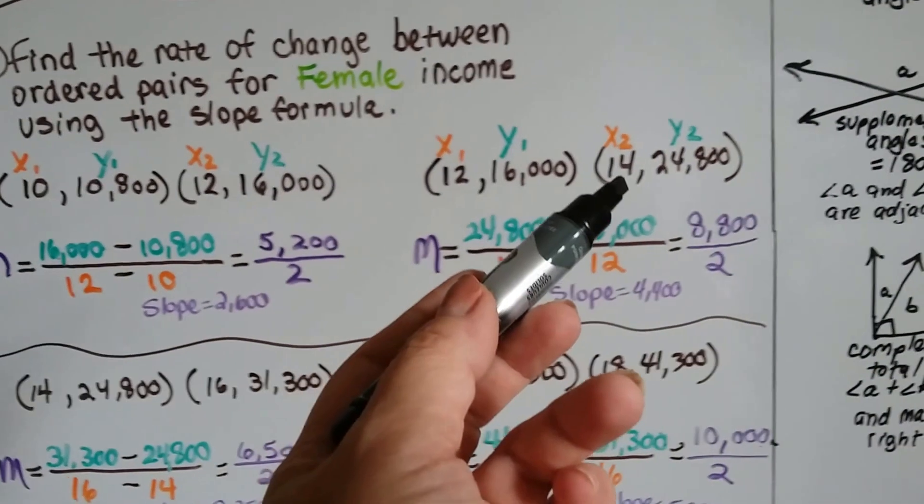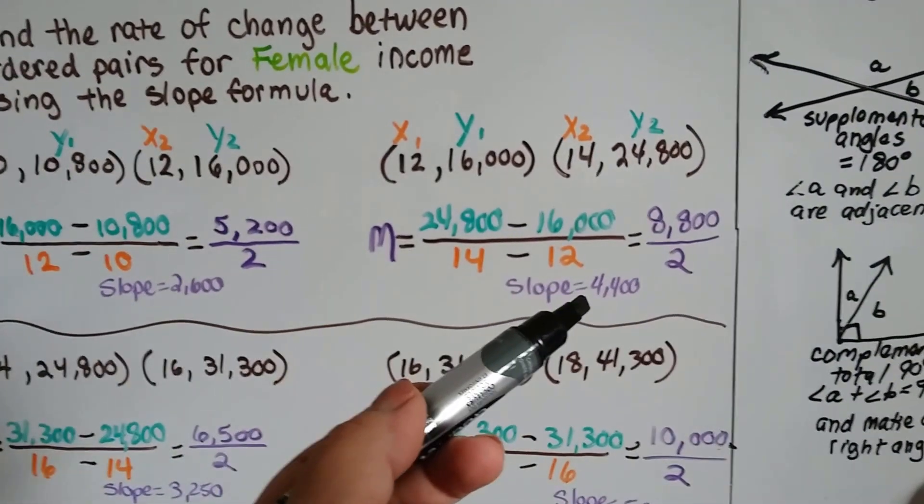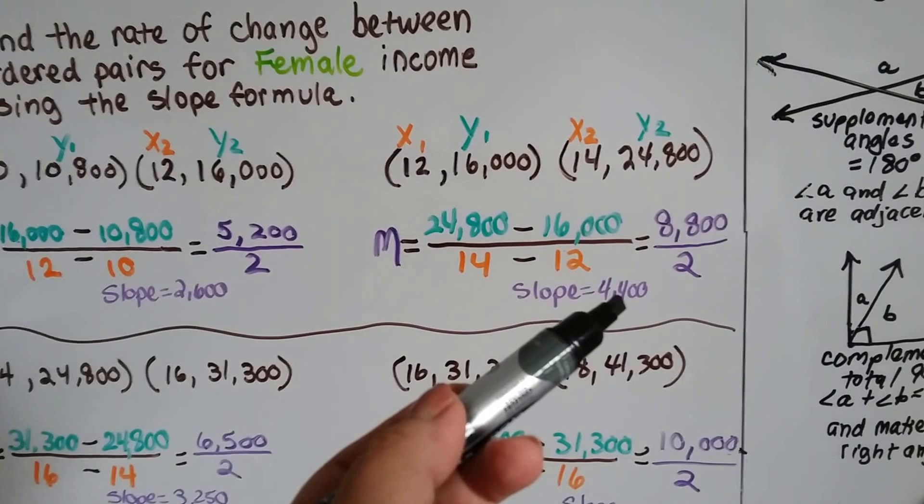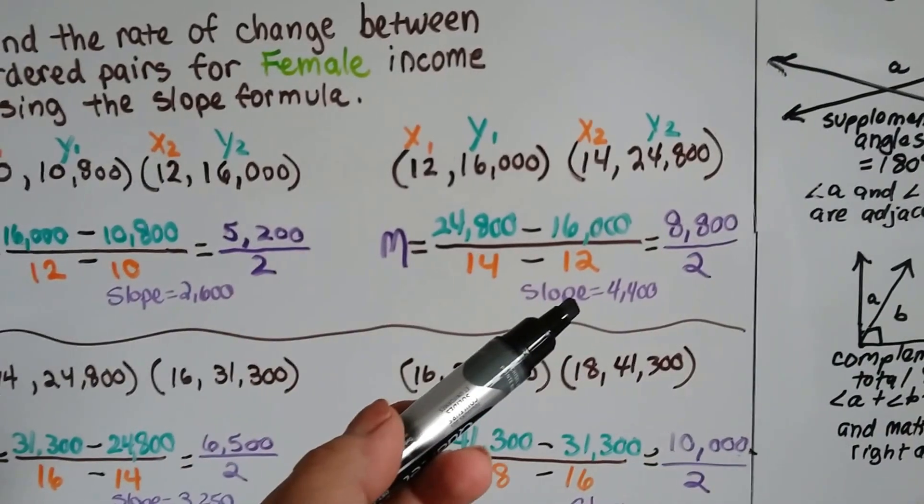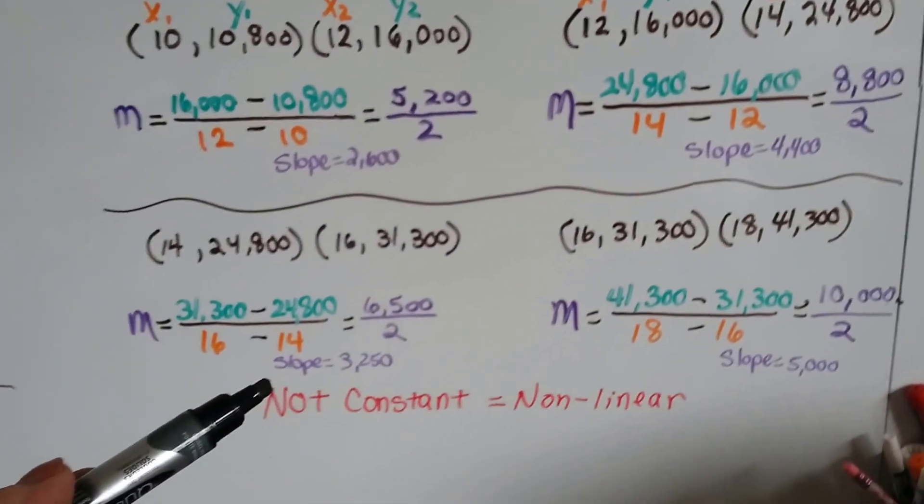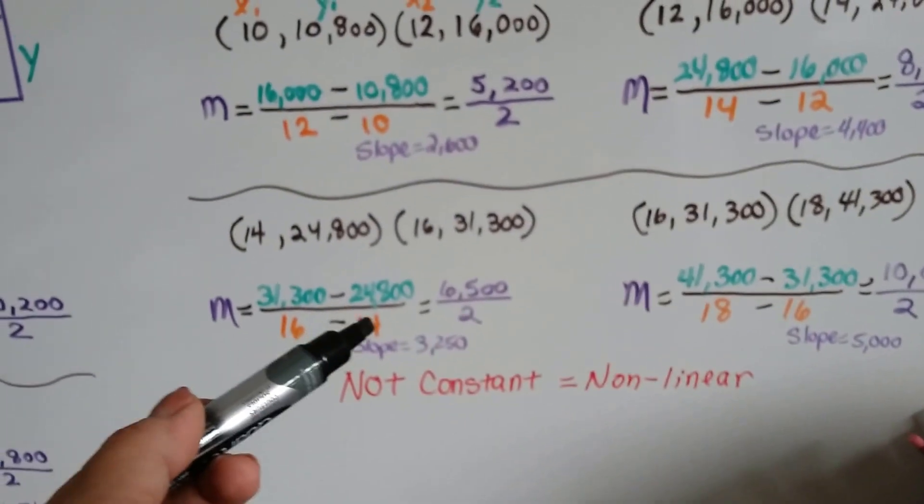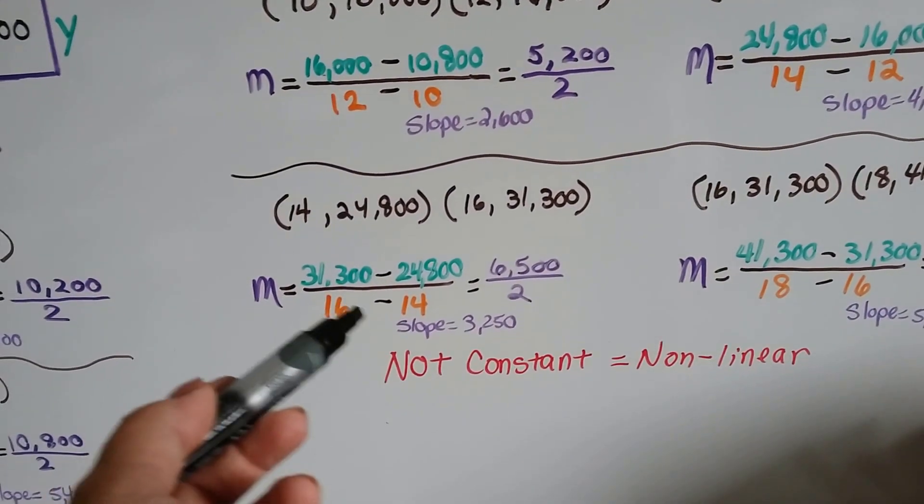Comparing a high school graduate to someone with an associate's degree, she's going to make an average of $4,400 for each year she stays in school.